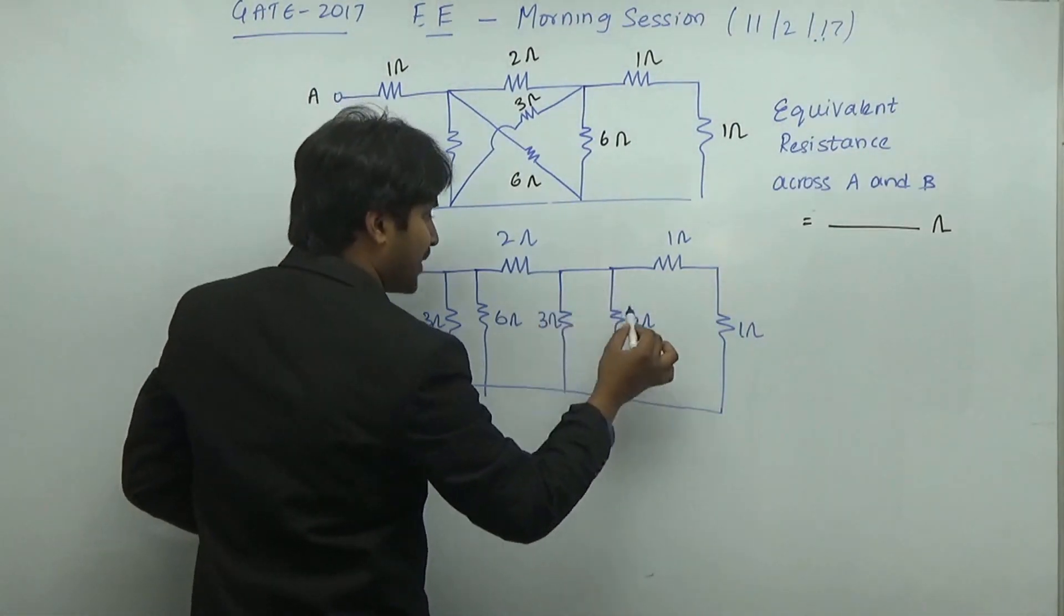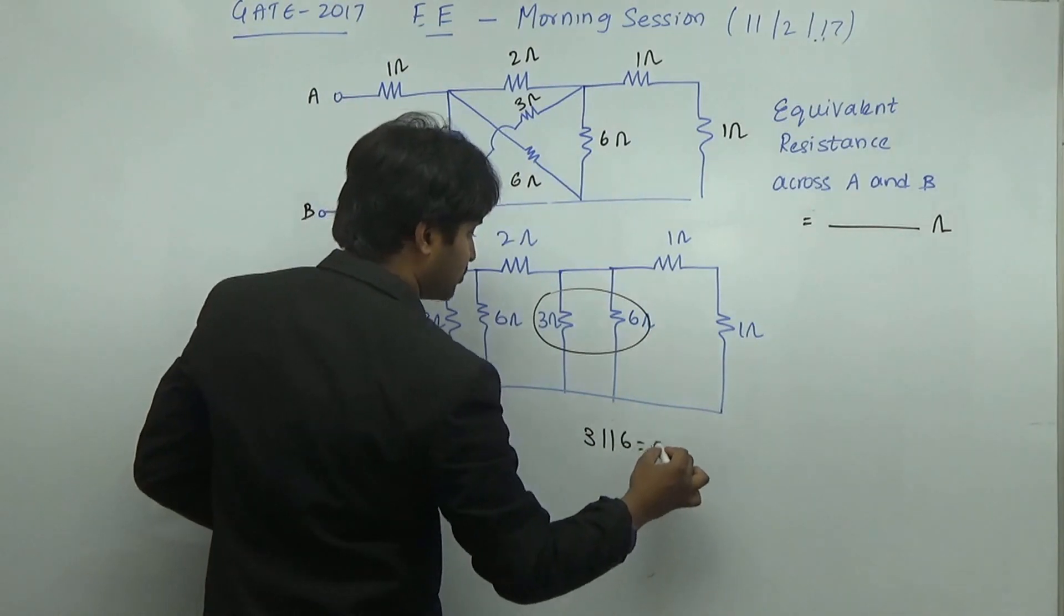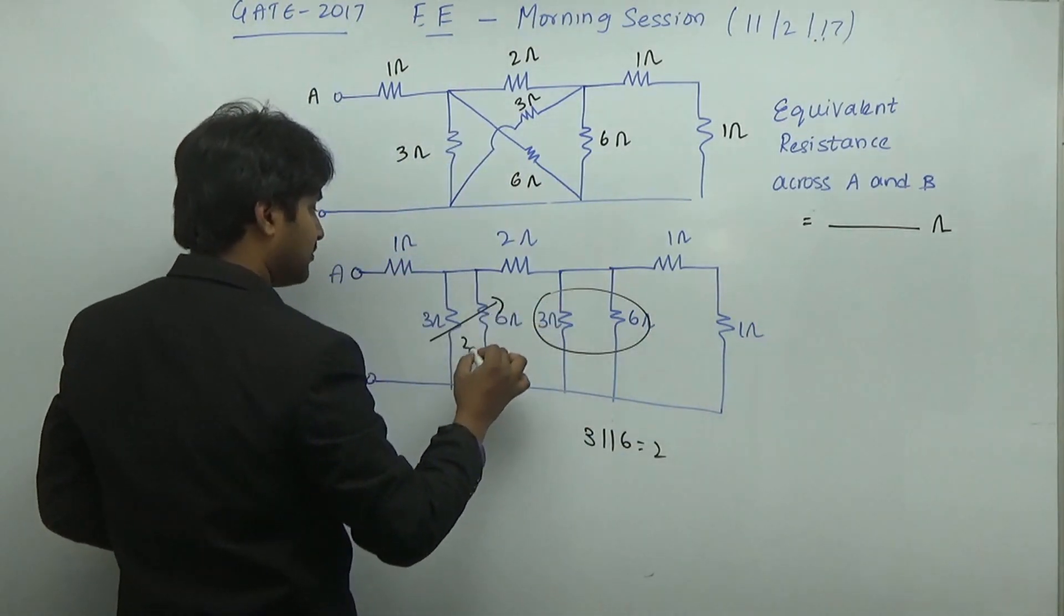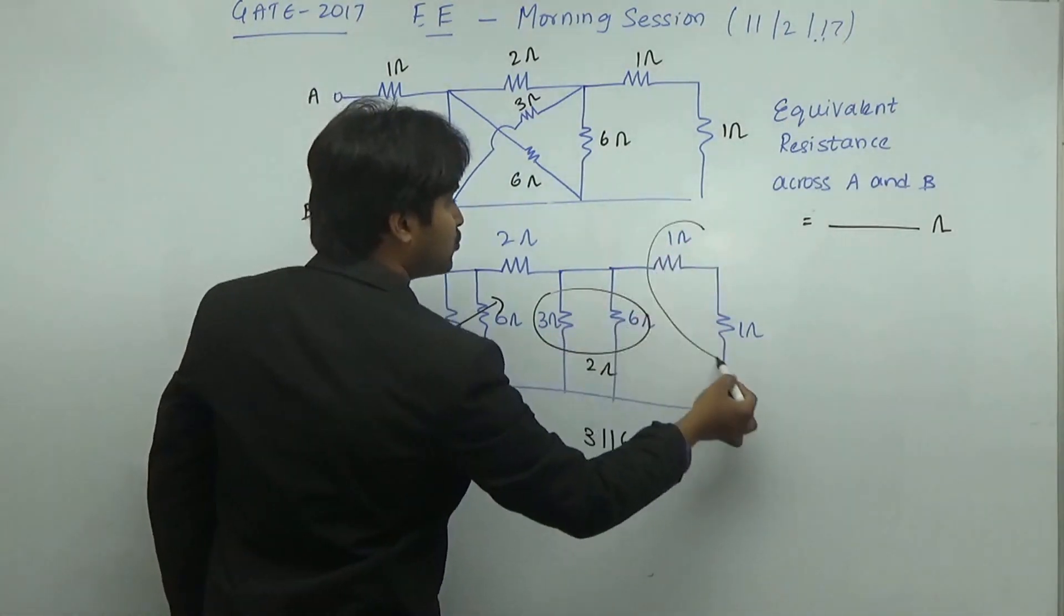Just see here, the equivalent of these particular 2 parallel resistors is going to be 3 parallel to 6. It is going to be equal to 2. So here you are going to have a 2 ohm resistor. Here you are going to have a 2 ohm resistor. Now of course here you have a 2 ohm resistor.